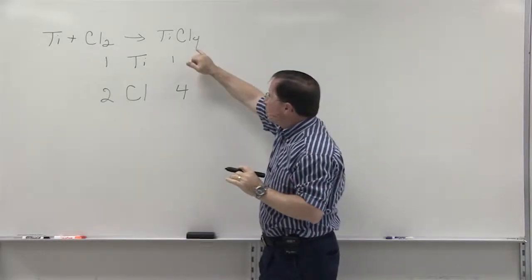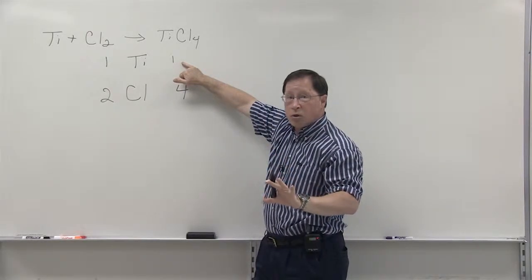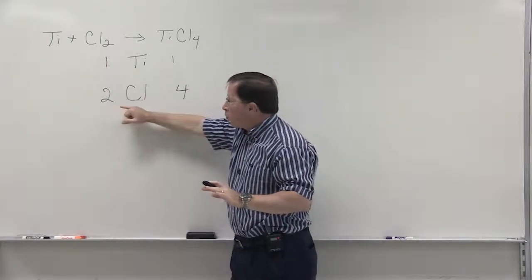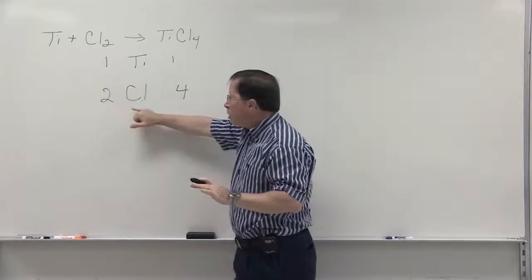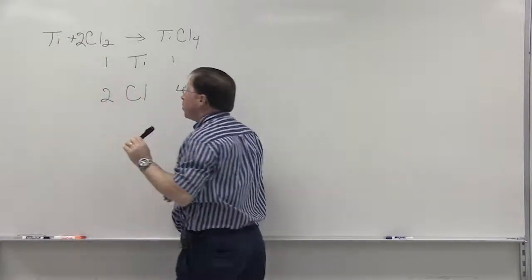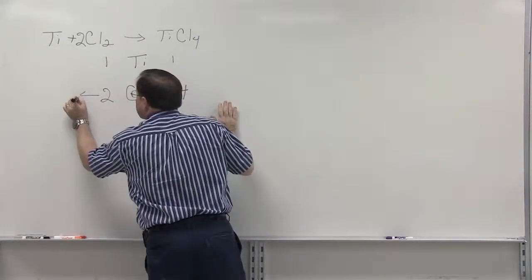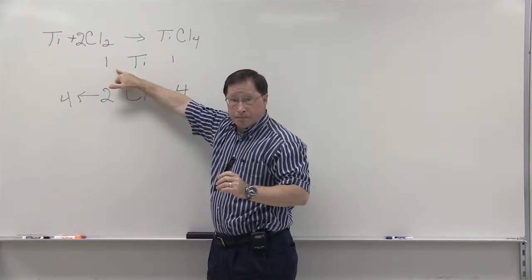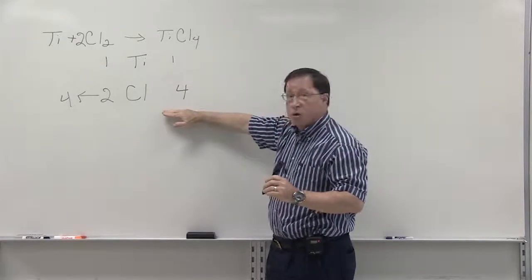This equation, starting from titanium tetrachloride, since we have our titaniums balanced, we shouldn't have to worry about titanium. But our chlorines are not balanced. If you look at the relationship between two and four, you know that in order to get four chlorines on this side, you're going to need to multiply by two. We have to multiply the entire molecule by two. So if we put a coefficient two in front of chlorine, that means that now we have four chlorines here. We have one titanium. And remember that on this side, we have one and four. So we balanced our equation.